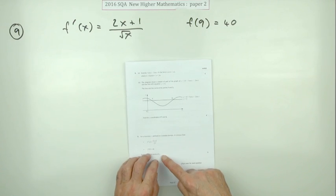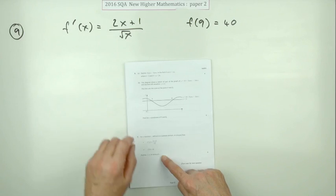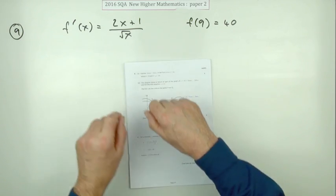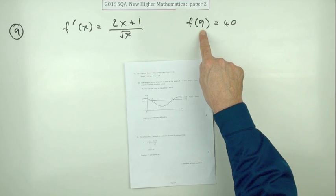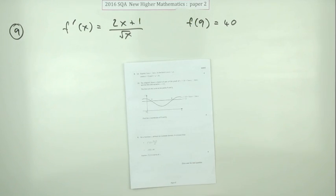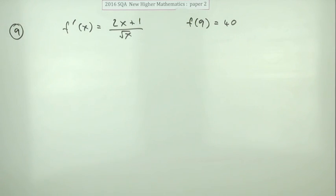Integrating produces a constant, so you've got these conditions here that says if you put in 9 you get 40 as an answer. So the first step would be integrate that, except that's not in the right form to be integrated.